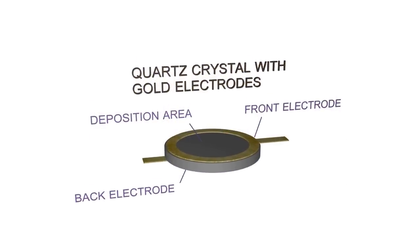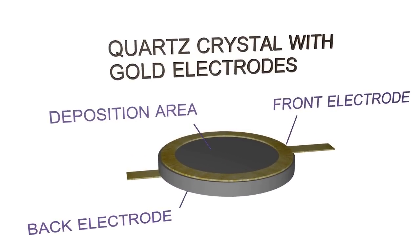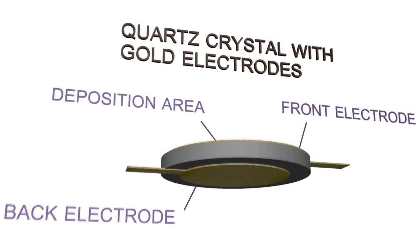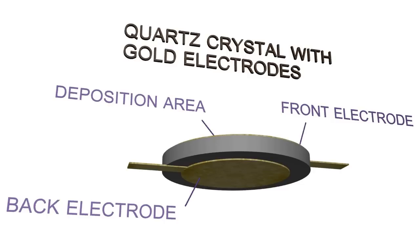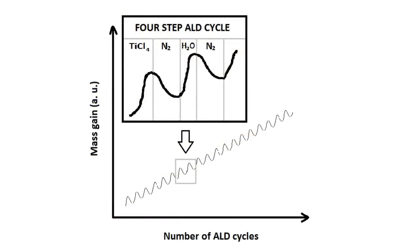The film growth can be monitored with the quartz crystal microbalance. If material is deposited on the quartz crystal during the ALD process, its mass slightly increases, causing a measurable drop in its oscillation frequency. This method is so sensitive that it allows monitoring even the individual steps in an atomic layer deposition cycle.